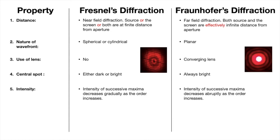Intensity of successive maxima decreases gradually, as you can see in the image, whereas in the case of Fraunhofer's, intensity decreases abruptly as the order increases. Shape of the pattern: it is very much dependent upon screen distance in Fresnel's class, as it is a diverging wavefront.